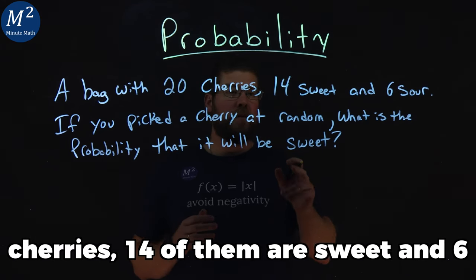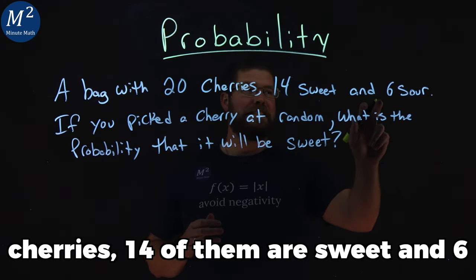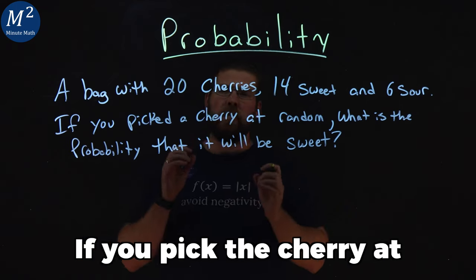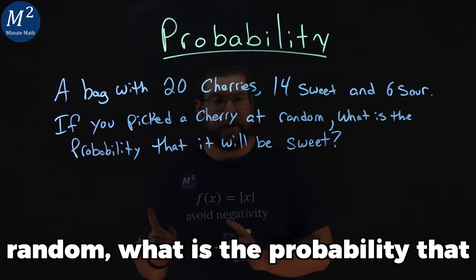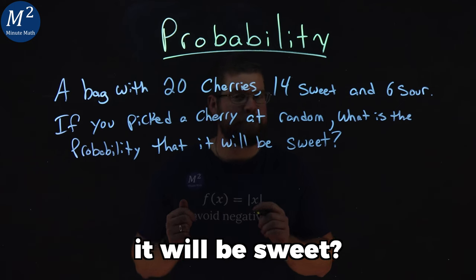You have a bag with 20 cherries. 14 of them are sweet and 6 are sour. If you pick a cherry at random, what is the probability that it will be sweet? Let's learn.